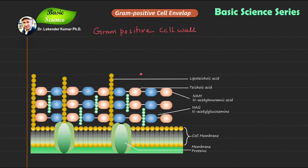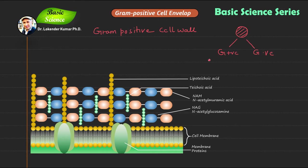Bacterial cells are divided into two categories based on the structure of their cell wall. I have designed a circular structure representing a bacterial cell, and I can divide these bacterial cells into two categories: gram positive and gram negative.